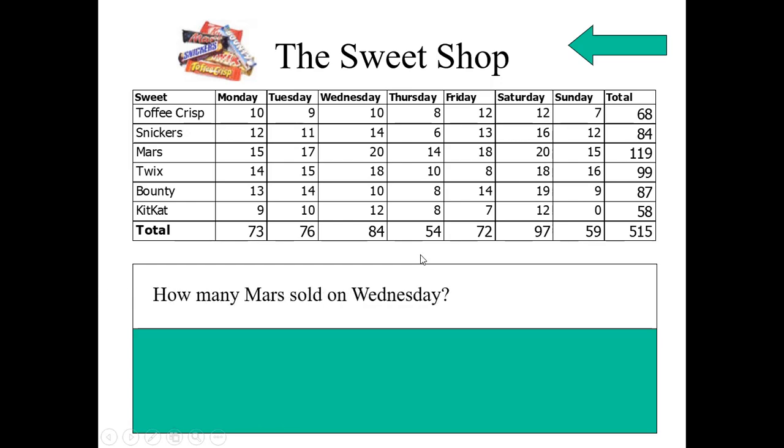Now answer each and every question to read the data. Here, how many Mars sold on Wednesday? Mars are here and Wednesday is here. So the answer is 20. So Mars sold on Wednesday is 20.